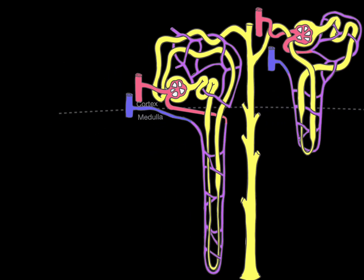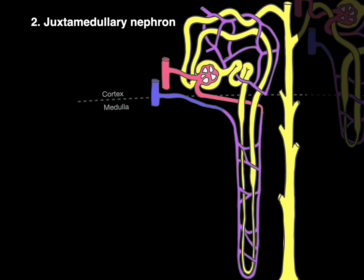So there we have a juxtamedullary nephron. Notice how the glomerulus is near the medulla. Afferent arteriole feeds the glomerulus, the first capillary in the nephron portal system. The efferent glomerular arteriole, efferent means away from, takes blood away from the glomerulus into these vasa recta where the blood goes down deep into the medulla and has the hairpin turn and comes all the way back up again going into those renal veins.